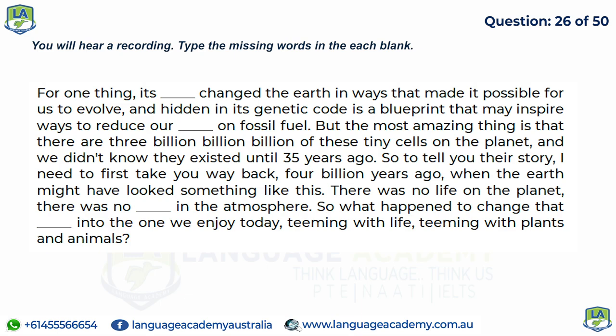For one thing, its ancestors changed the earth in ways that made it possible for us to evolve, and hidden in its genetic code is a blueprint that may inspire ways to reduce our dependency on fossil fuels. Most amazingly, there are three billion billion billion of these tiny cells on the planet, and we didn't know they existed until 35 years ago. To tell their story, we need to go back four billion years ago, when the earth had no life and no oxygen in the atmosphere — and ask what changed that planet into the one we enjoy today, teeming with life, plants, and animals.